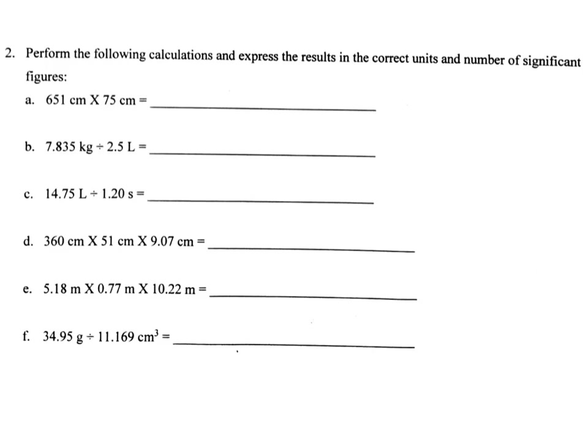So we have problem 2a. First, let's look at the significant figures we have. We have 651, which is three significant figures, and 75, which is two significant figures. We do the math and get 48,825, which by itself has five significant figures, but our answer cannot have more than two because 75 only has two. So we round to two significant figures and get 49,000. Units are centimeters times centimeters, which gives us centimeters squared. Our answer is 49,000 centimeters squared.